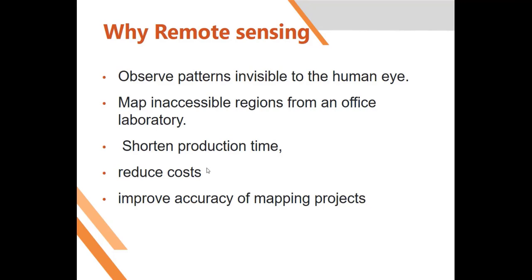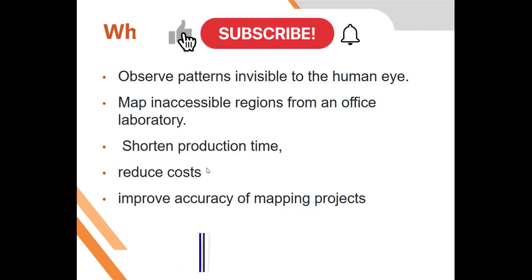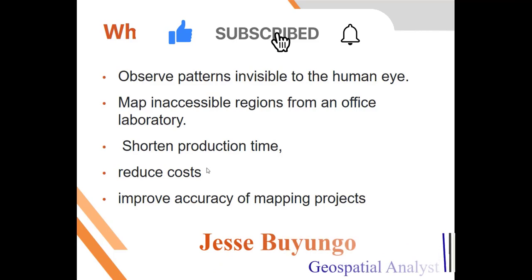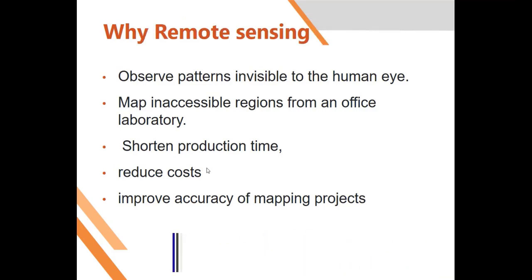If you want to complete a project in the shortest period of time without going into the field, you just need to get some satellite images, analyze them, and you'll save costs. By doing precise mapping using remote sensing images, the accuracy of your project will be very fine. There are many more advantages of using remote sensing that we shall see throughout this course.